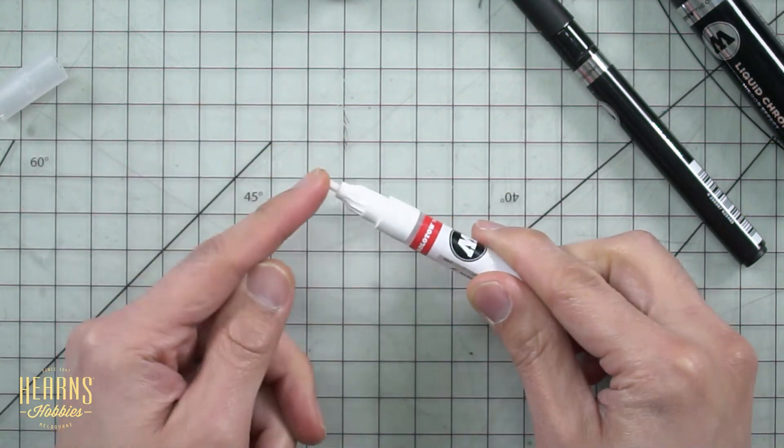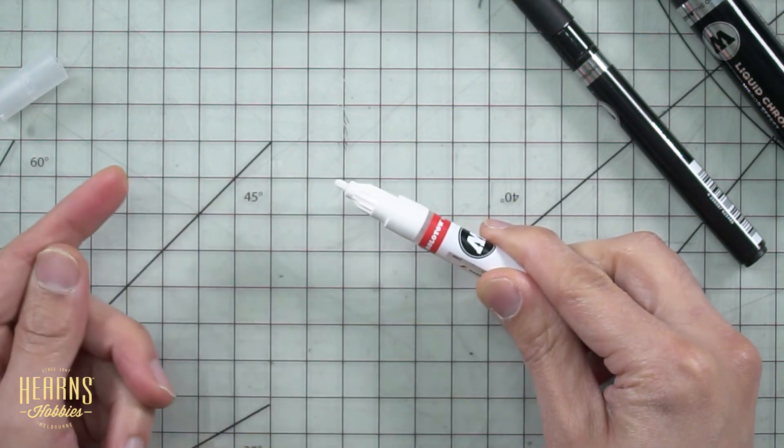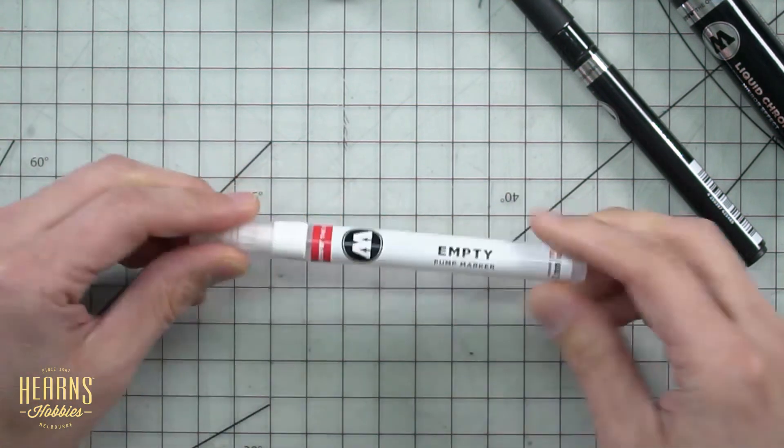Then you get the tip, pop the tip back in place. You can see how you press that. Make sure that the valve is still nice and smooth. Put the cap on. That's done. So that is how you pull apart a Molotov pen.